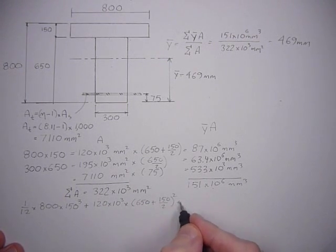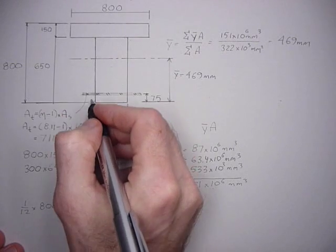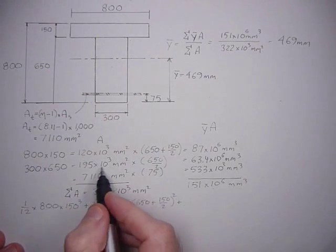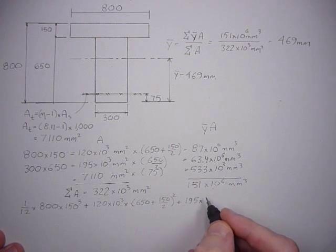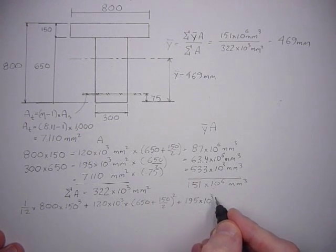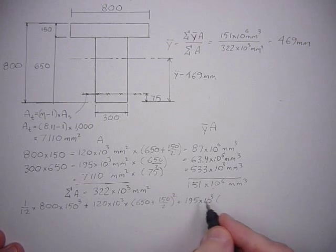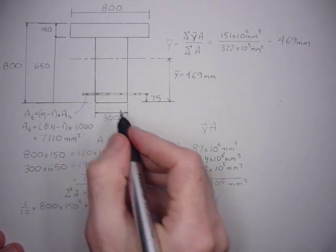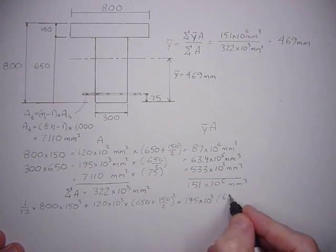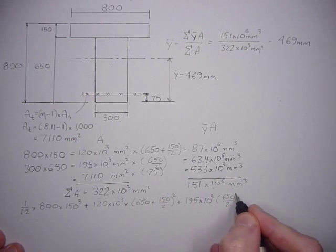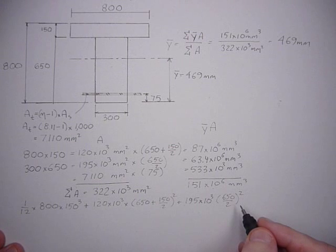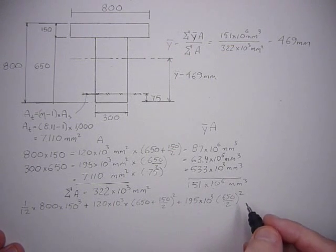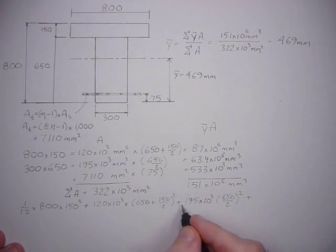Plus the web area, which is 195 times 10 to the third millimeter squared, times its centroid distance to the base, which is 650 over 2 squared. Plus its inertia, I should write the inertia first: 1/12 times 300 times 650 cubed.